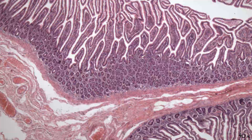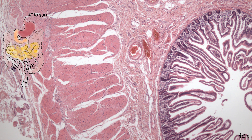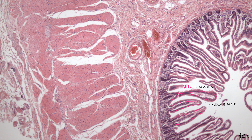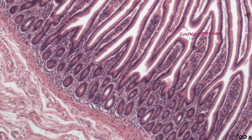Let's have a look at our next section, which is a section of the jejunum. In contrast to the duodenum, villi in the jejunum are gradually shorter and their shape is described as finger-like. Jejunum, as opposed to duodenum, has no Brunner's glands. The surface epithelium, made mostly of enterocytes, contains more goblet cells than in the duodenum. The epithelial lining, lamina propria with crypts of Lieberkühn, and lamina muscularis mucosae are the three layers of the mucosa.